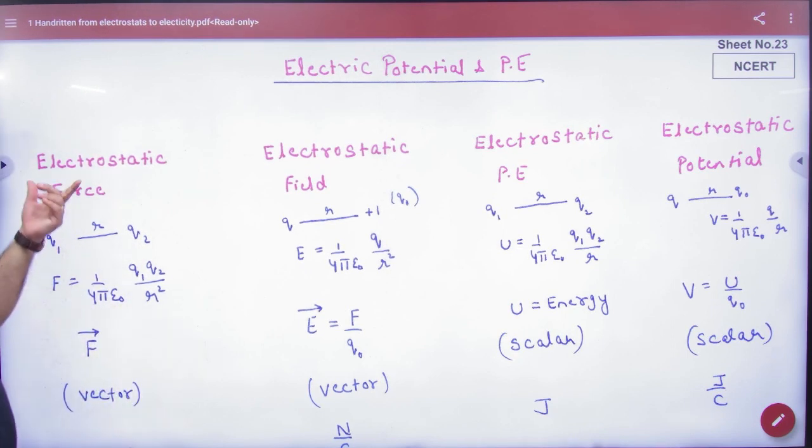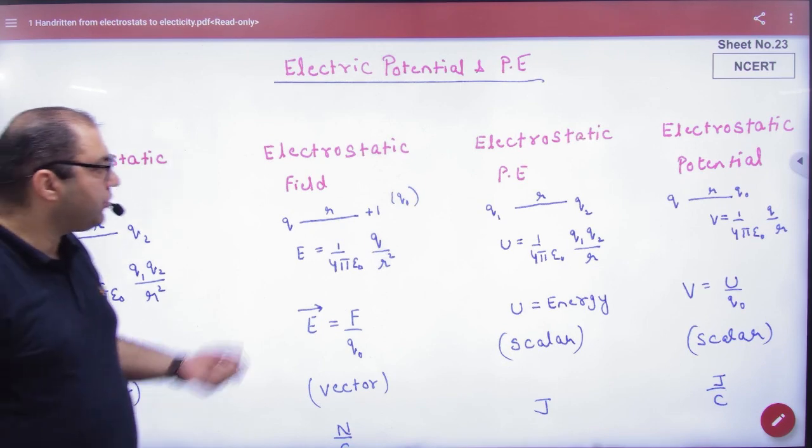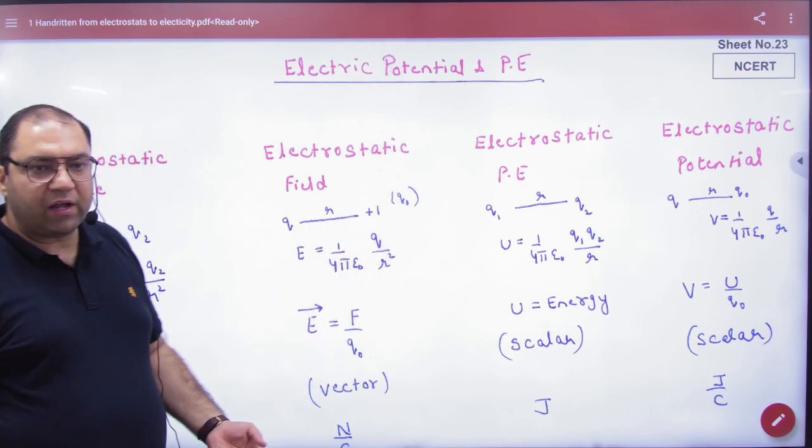The first thing we have done was force. We need 2 charges. The formula was q1, q2 by r². Force was a vector. Then we had electrostatic field.